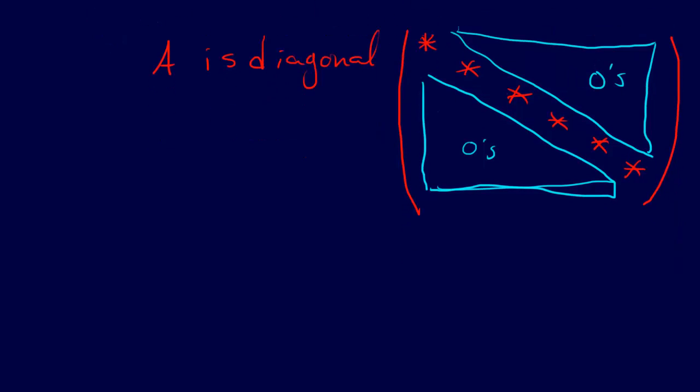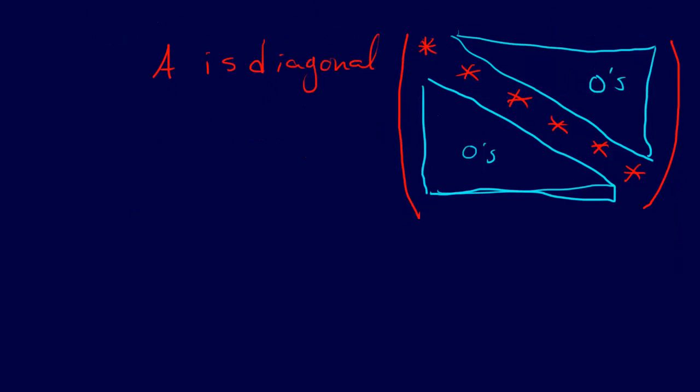And a special case of a diagonal matrix is the identity matrix. The identity matrix is a special matrix where not only is it diagonal, but all the entries on the diagonal are one, and everything else is zero. That's the identity matrix.